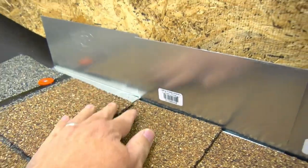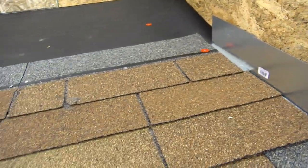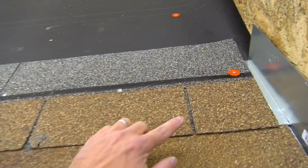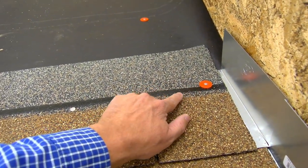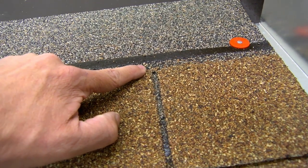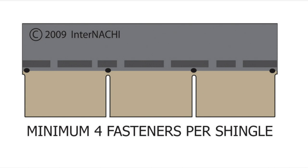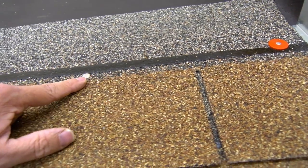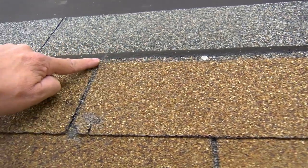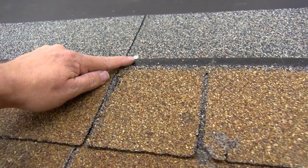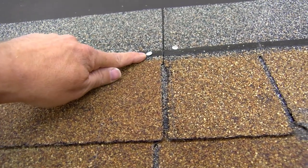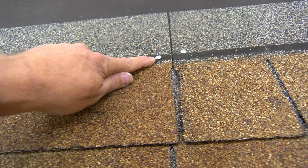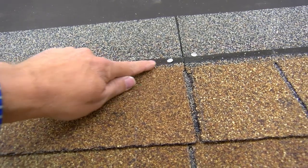There's no overlap from one step flashing to the next, and this was installed improperly — water can actually travel behind the step flashing, and it's not even fastened. A fastener for underlayment is used, so we're missing proper fastening at the shingle. Four fasteners per shingle is the manufacturer's recommendation, and in high-wind areas you get six. That's improperly nailed — it should be below the self-adhesive strip. This is a high nail, above the self-adhesive strip, which is incorrect.